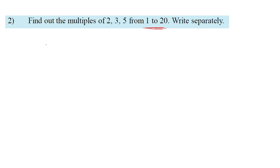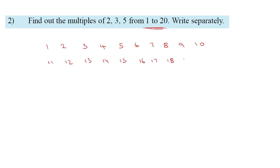First, we list the numbers 1 to 20: 1, 2, 3, 4, 5, 6, 7, 8, 9, 10, 11, 12, 13, 14, 15, 16, 17, 18, 19, 20. Okay.